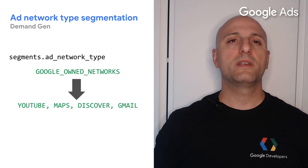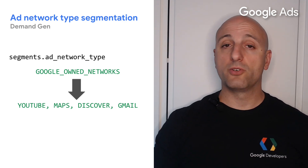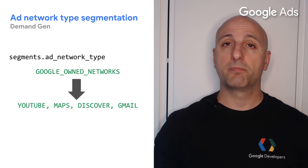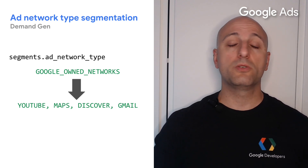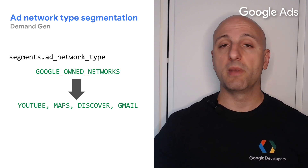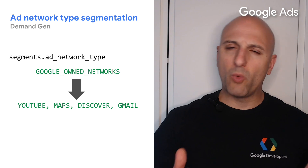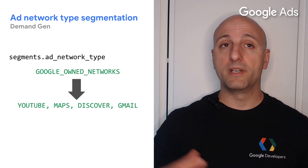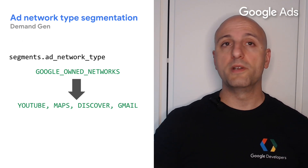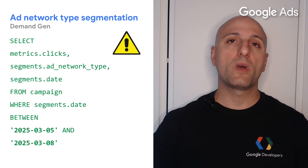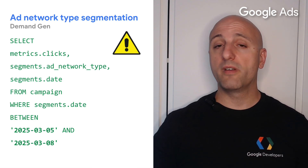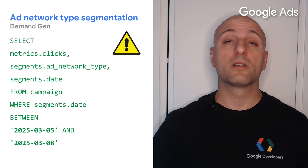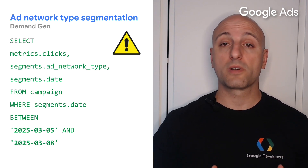Starting with v20, if you segment your reports by ad network type, you will get more granular segmentations split between YouTube, Maps, Discover, and Gmail. Note however that this segmentation is only effective for data from March 7th onwards, so even if you use v20 and query for data before that date, you will still get metrics aggregated in the Google owned networks segment.